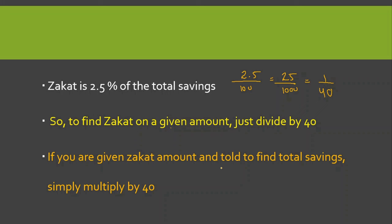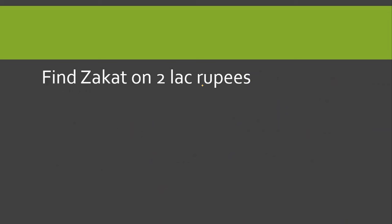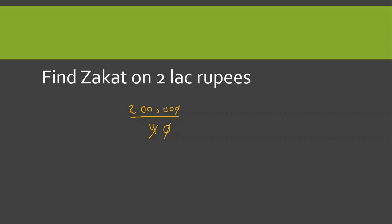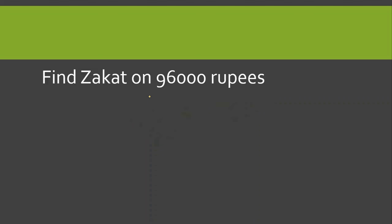اگر آپ کو Zakat amount given ہو اور آپ سے کہا جائے کہ total amount find کریں تو آپ اس amount کو 40 سے multiply کریں۔ مثال: Find Zakat on 2 لاکھ روپیز۔ 2 لاکھ divided by 40 کریں گے — zero cut جائے گا اور 45 zero سے 20 ہے — تو آپ کے پاس five thousand آ جائے گا۔ تو 2 لاکھ روپیز پہ Zakat ہے پانچ ہزار روپیز۔